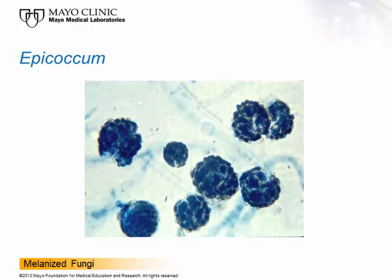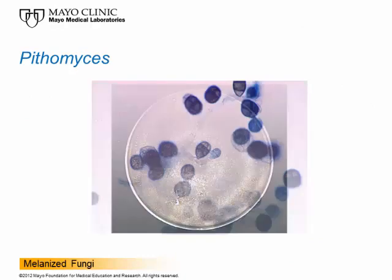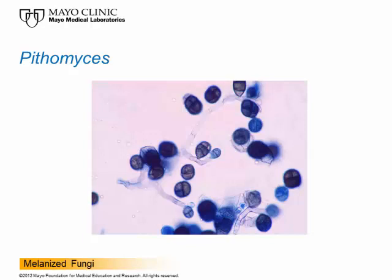The next organism is Pithomyces. In this situation, conidia come right off the hyphae — they're not well differentiated from the hyphae, with no real structure showing how they're produced. They're produced along the sides of the hyphae. The conidia have horizontal and longitudinal septations, are kind of elliptical, maybe club-shaped or pear-shaped, may be smooth to rough, and are produced singly. The culture shows dark pigment, and the conidia are attached directly to the hyphal strand with no underlying structure.